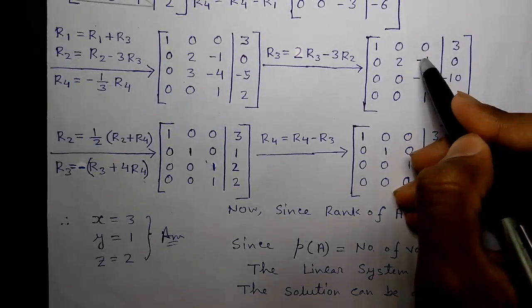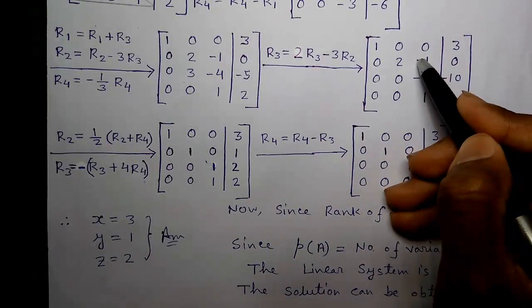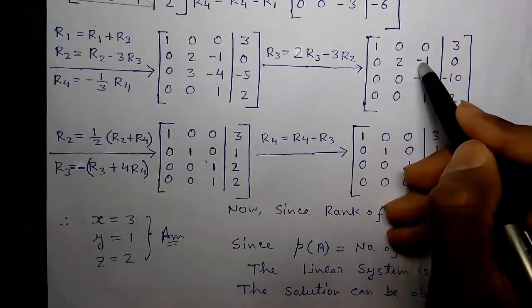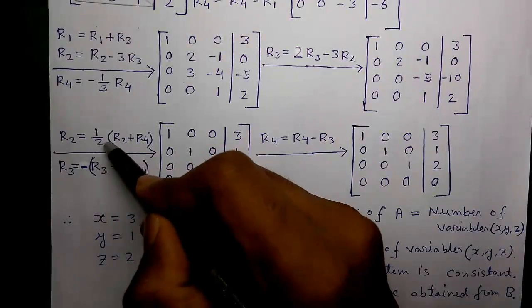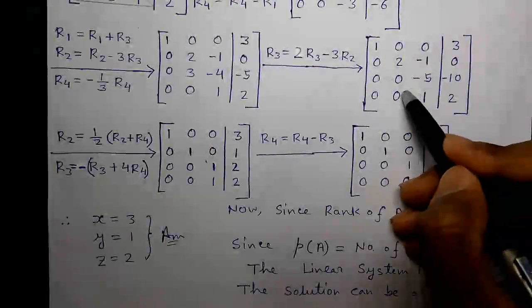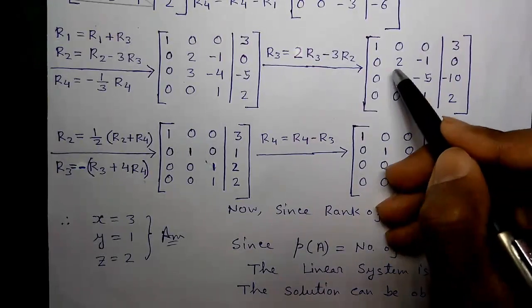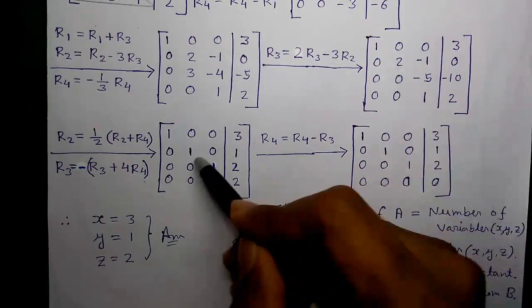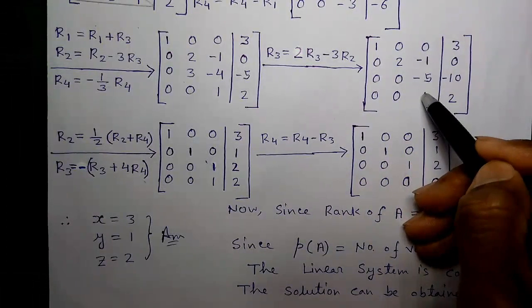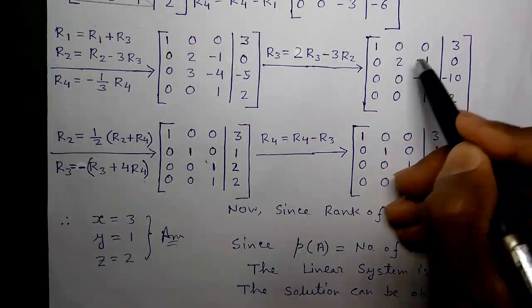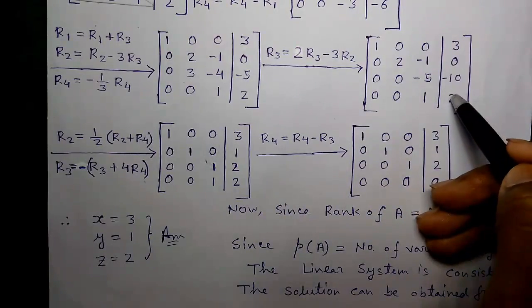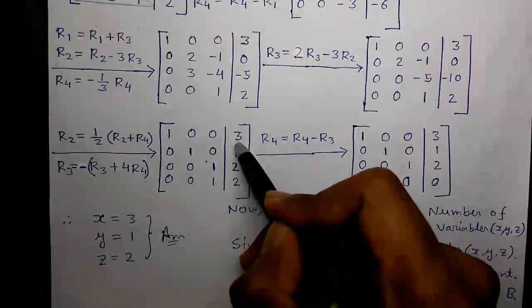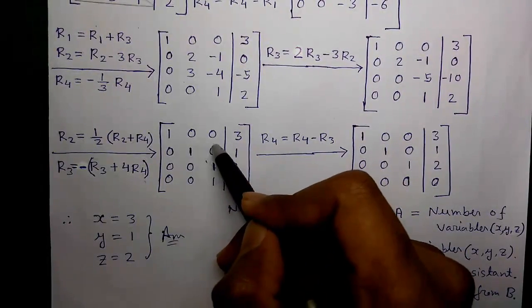Now we need a zero at this position and a 1 at this position. We apply R2 = (1/2)×(R2 + R4): 0 + 2 = 2, divided by 2 = 1; −1 + 1 = 0, divided by 2 = 0; 2 + 0 = 2, divided by 2 = 1. This is our new row 2 — we have got a 1 at this position and 0 at this position.